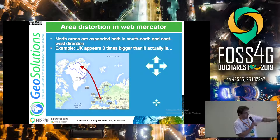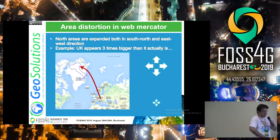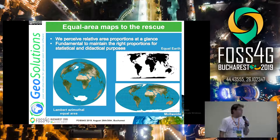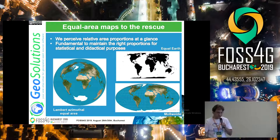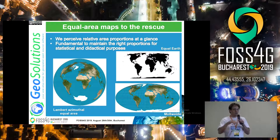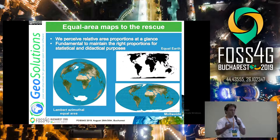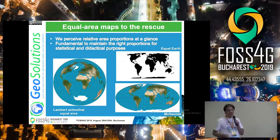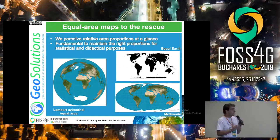UK is actually three times smaller than we see it in web Mercator, and this problem becomes bigger and bigger as you move far north. So equal area maps to the rescue. There is also a problem of perception. You can use tools to measure areas and distances on a map, but you cannot turn off your eyes. Your eyes perceive relative proportions naturally. So if interpreting the map is based on such reasoning, people will do it whether you like it or not. In that case, you need an equal area projection.